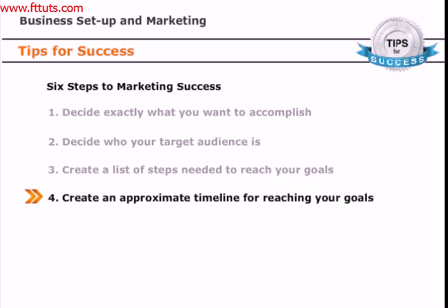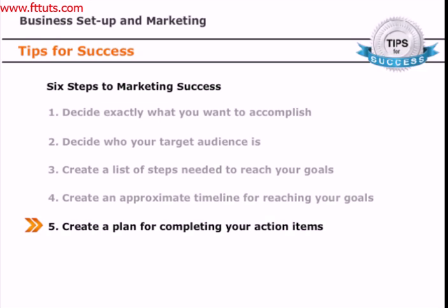The fourth step is to come up with an approximate timeline for reaching your marketing goals. Think about how long it should take for each goal or step to be completed and develop a general plan for when you should complete each one. Fifth, create a plan for completing the actions you've identified. Consider questions such as: will all the steps be undertaken at once, or is there a clear progression to follow?